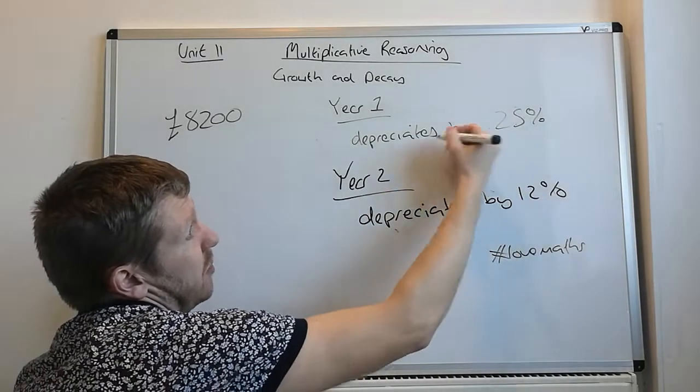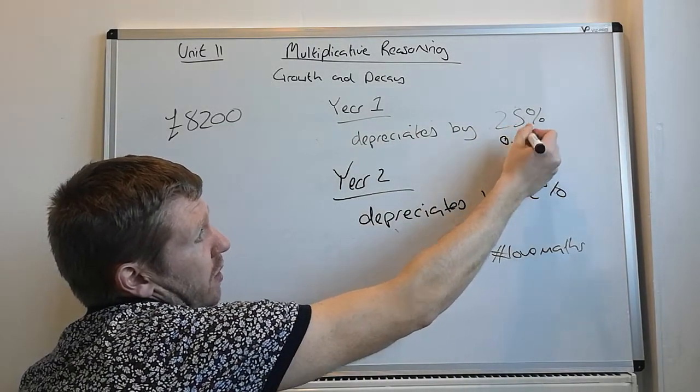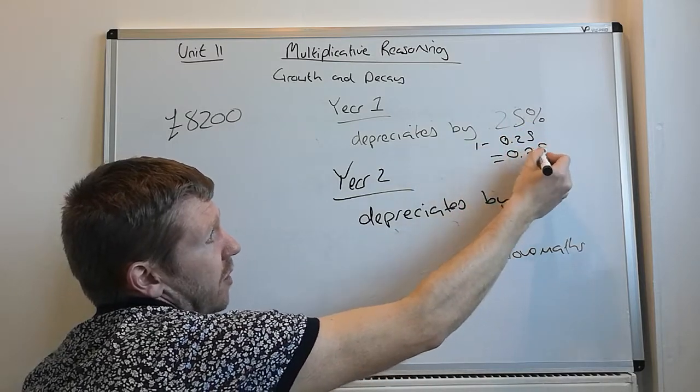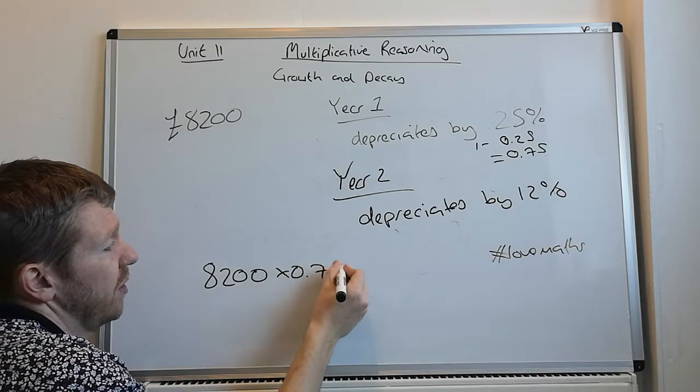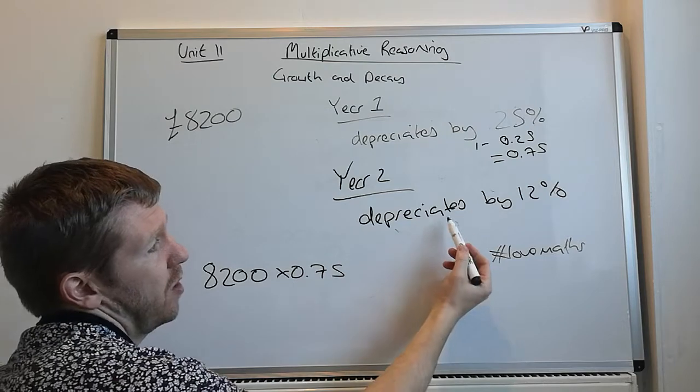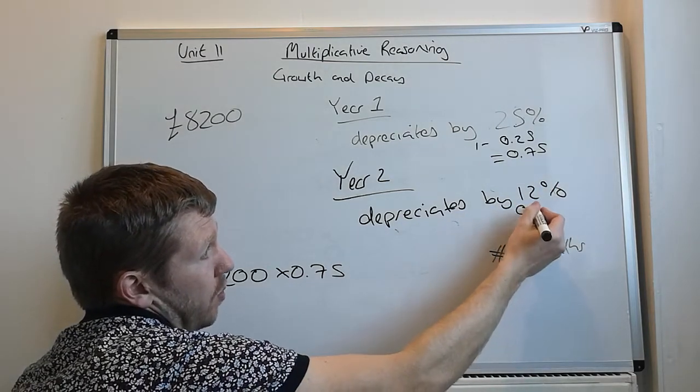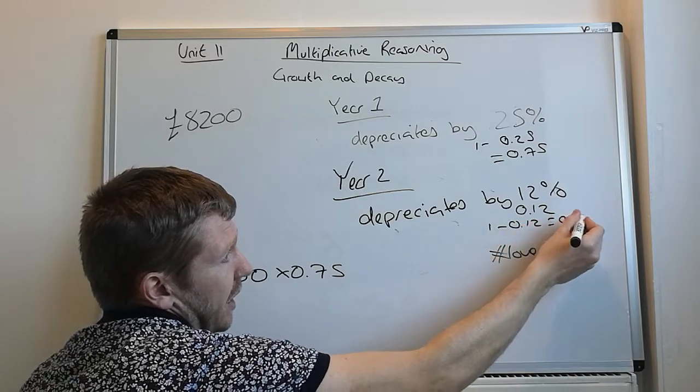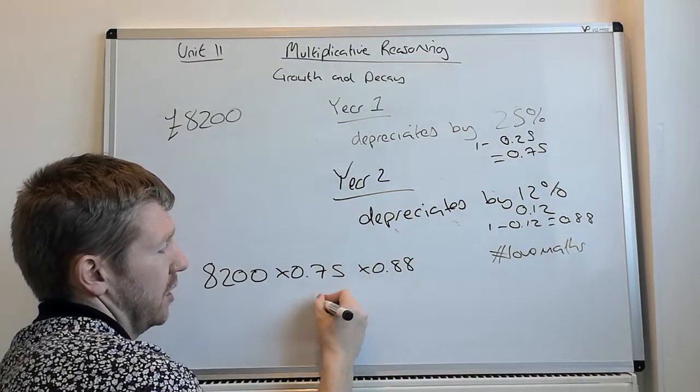So, depreciates by 25%, that's 0.25. So, 1 minus 0.25 is 0.75. That's the first calculation: 8,200 times by 0.75. And then it drops by 12%, that's 0.12. One take away 0.12 is 0.88. So, you times it by 0.88. And you can work it out.